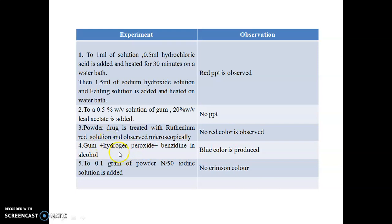The fourth test: the gum is dissolved in hydrogen peroxide and treated with benzidine in alcohol — it shows a deep blue color. Specifically, dissolve 0.25 g of drug in 5 ml of water by shaking in cold, add 0.5 ml hydrogen peroxide solution and 0.5 ml of 1% benzidine in alcohol. On shaking and standing, an unstable blue color is produced due to the presence of the oxidase enzyme.